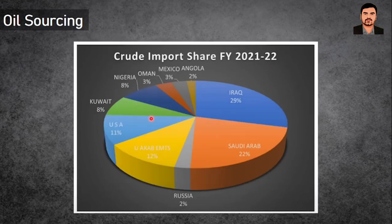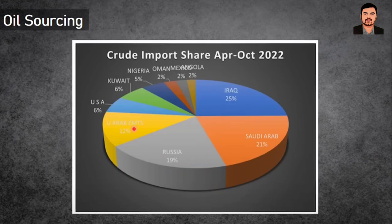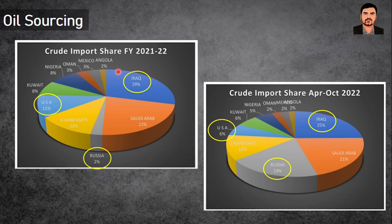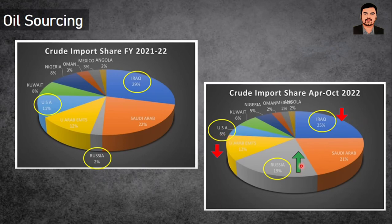In FY 2022-2023, Russia's share jumped from 2% to 19% of India's crude imports, while USA's share fell from 11% to just 6%. Because of the significant discounts offered by Russia, India increased its oil sourcing from Russia and reduced imports from the USA. The USA, losing market share, has responded with various sanctions and geopolitical maneuvering.